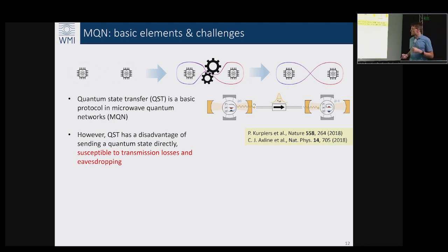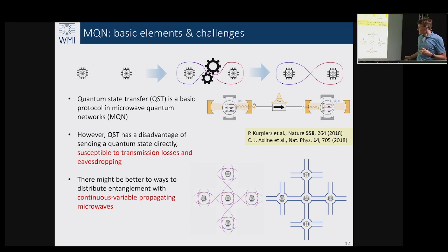This QST protocol however has a very known disadvantage: it's insecure in the sense that if some eavesdropper tries to extract this information she or he will do it easily, and it's very susceptible to transmission losses. This is why when thinking about extended microwave quantum networks we are thinking about better ways how to distribute entanglement and maybe how to make it more secure. This security criterion is important, for example, to the German security agencies like the BSI, who are already worried about security concerns inside of future quantum supercomputers.